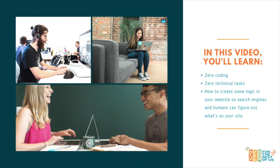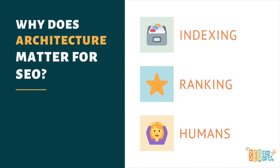In this video you're gonna learn zero coding, zero techie tasks. But you are gonna learn how to create some logic in your website so that search engines, and most importantly humans, can figure out what's on your website. So why does architecture matter for SEO? There are three primary reasons. Number one is indexing — when Google can crawl your website well, they can index it more quickly and more accurately, and that leads to better rankings. We all want to rank, we all want more traffic, and better site architecture will absolutely help your rankings. It's also better for humans — people are gonna be on your site longer and find what they need a lot more easily.